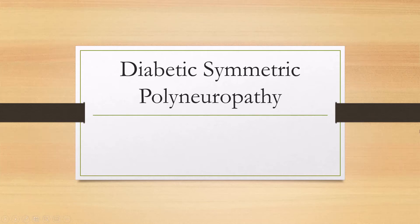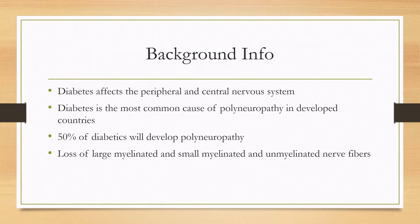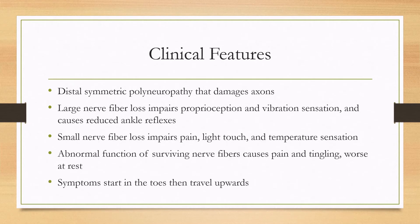Let's talk about diabetic symmetric polyneuropathy. Diabetes affects the peripheral and central nervous system and it's the most common cause of polyneuropathy in developed countries. It's estimated that about 50% of diabetics will develop polyneuropathy, characterized by the loss of large myelinated, small myelinated, and unmyelinated nerve fibers. It affects the axons, and especially the longest axons are affected first. It is distal and symmetric.